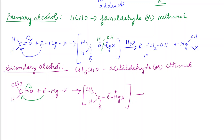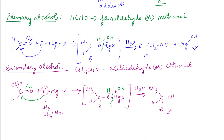This adduct on further hydrolysis gives the secondary alcohol. Hydrogen and OH are added, resulting in CH₃-C(H)(R)-OH. This is a secondary alcohol. If R is a methyl or ethyl group, the corresponding secondary alcohol is obtained. This is the preparation of secondary alcohol.